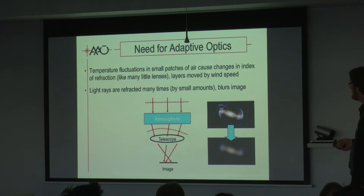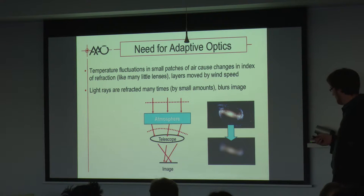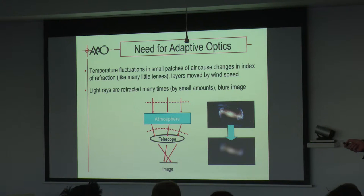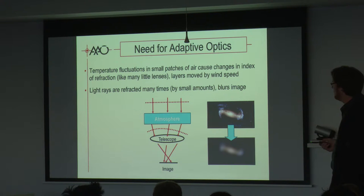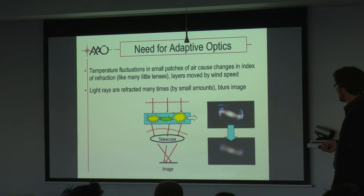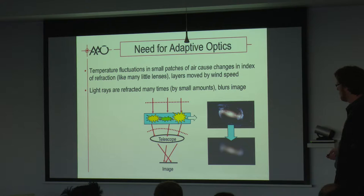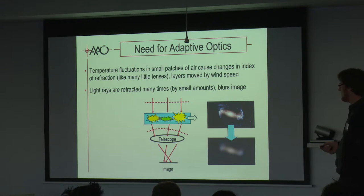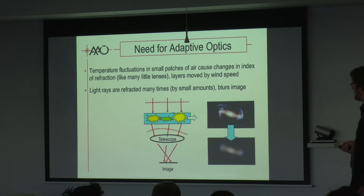We need adaptive optics mainly because the atmosphere blurs objects. In the atmosphere we have different temperature fluctuations — dense air, hot and cold air that mix and refract the light rays. We have a flat wavefront coming in at the top of the atmosphere, up to 15 kilometers, and when it hits that atmosphere the light rays get refracted many times. The wavefront is no longer planar — it has aberration — and the telescope just can't form a sharp image. The hot and cold air is usually at the boundary of wind shear and large temperature gradients.